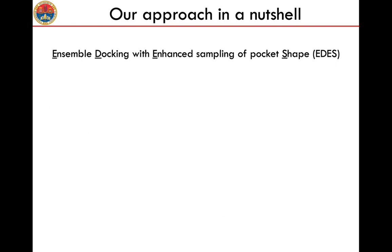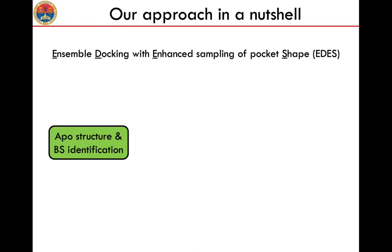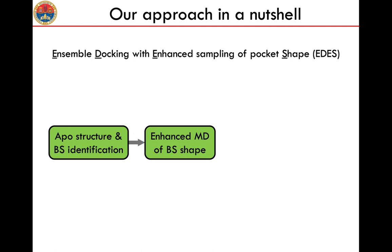Our approach in a nutshell is represented here. We call it AEDIS, which stands for ensemble docking with enhanced sampling of the pocket shape. The workflow is as follows: first you identify the binding sites on a protein of interest, using either experimental information or other methods. There are several servers that find the so-called druggable regions on the surface of proteins that are putative binding site regions. Then we enhance the sampling of different shapes and volumes of these binding sites using a novel set of collective variables that we introduced in AEDIS.